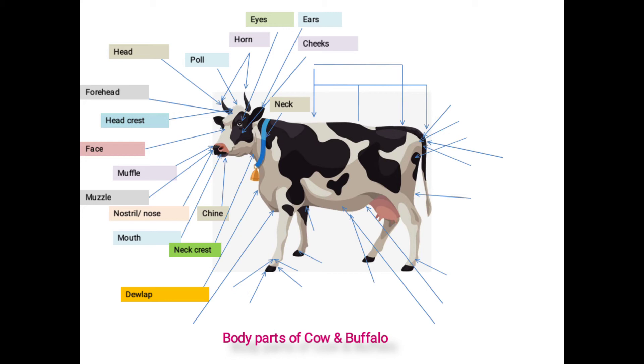It is prominently developed in Zebu cattle and completely absent in buffaloes and exotic cattle. Next one is brisket. Fleshy wall-like structure hanging in between four legs is known as brisket, which is prominent in buffaloes than cows.